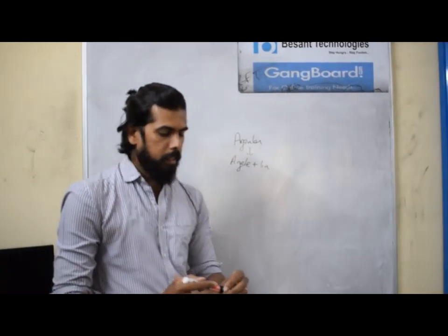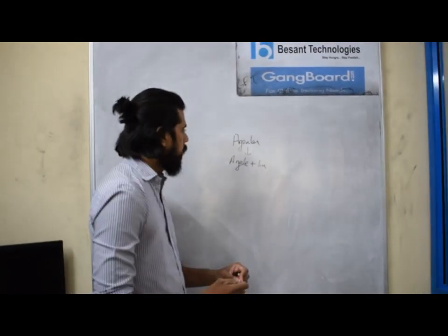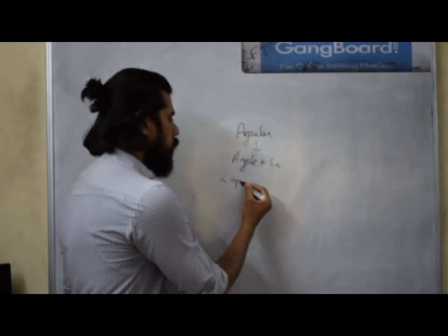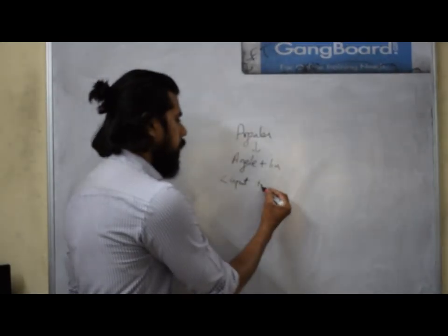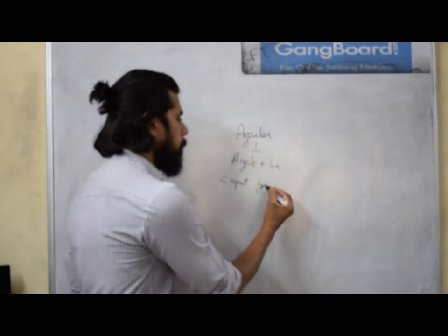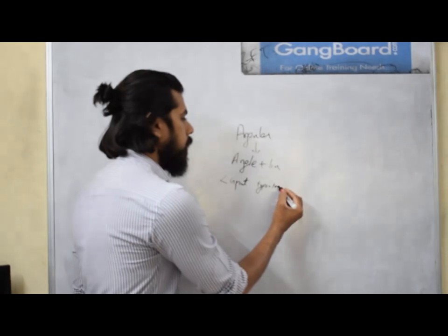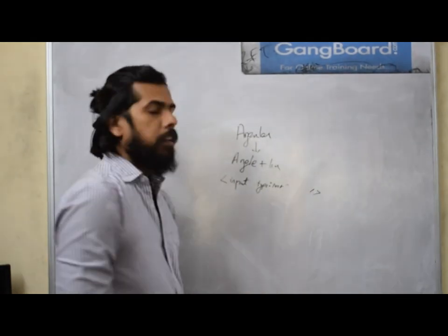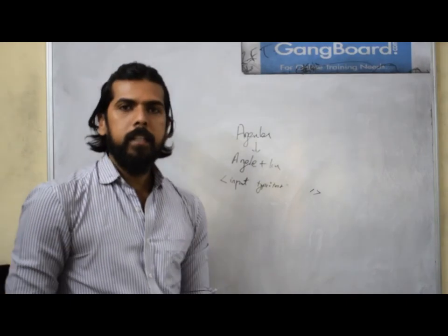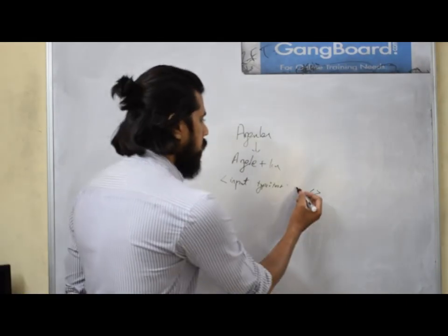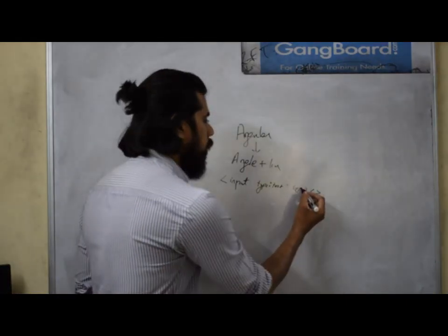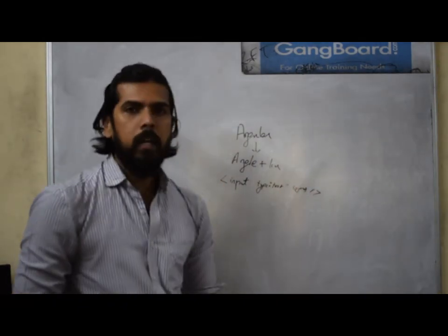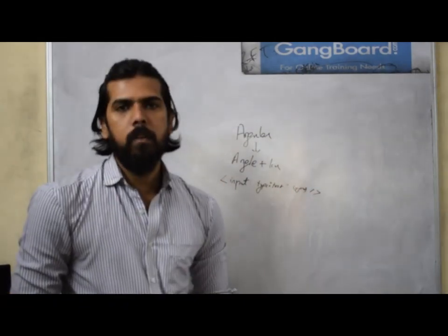First we will go ahead with the English meaning. Angular says that what you write in an input HTML file — for example, input type text — if you want to bind anything to an HTML tag, if you bind some value like ng-model or whatever it may be inside this, that angle part is called Angular.